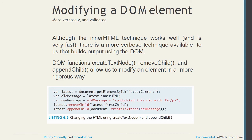Another technique to build output using the DOM includes 'createTextNode', 'removeChild', and 'appendChild', which allow modifying DOM elements more precisely. For example: 'latest.removeChild(latest.firstChild)' to remove the first child, and 'latest.appendChild(document.createTextNode(newMessage))' to add a new child text node. For more examples, visit w3schools.com where five to six simple examples are available to get a better understanding.